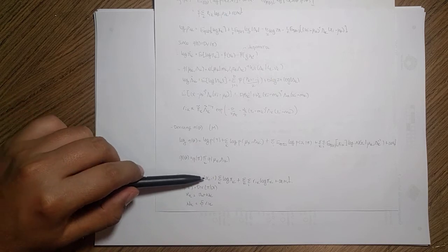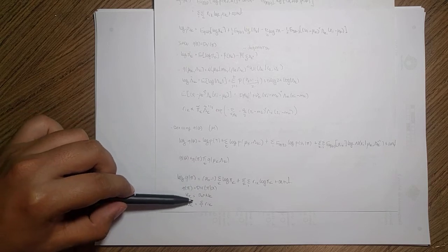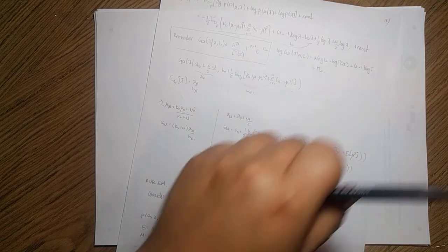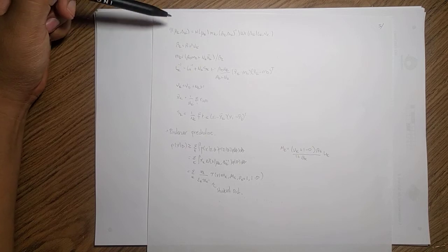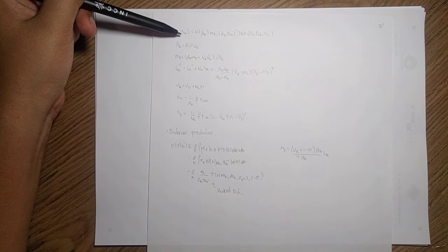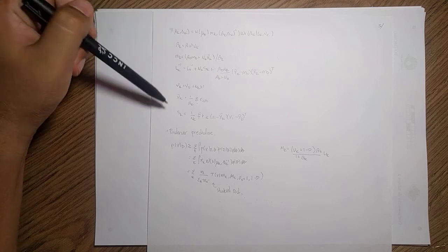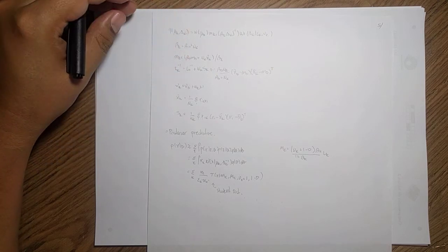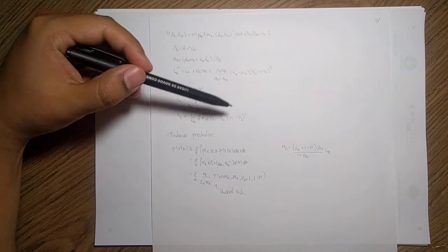Once we apply this optimization to each of those parameters, we start finding for instance that this q_pi is also Dirichlet distributed, so we can simply find those parameters as we did before. We can do the same for the normal. We apply this and we will find out that the q_mu_k and lambda_k are normally distributed, so you can just simply go and take those parameters from the original one.